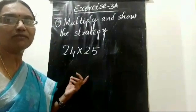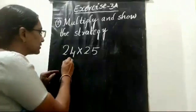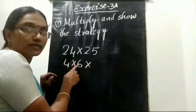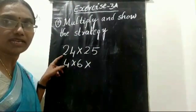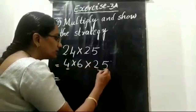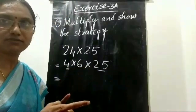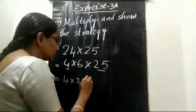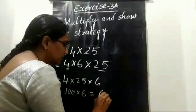One more example. We can break up any number to use the strategy. Here 24 is possible to break up: 4 into 6 is 24. So I break up 24 as 4 into 6, and write 25 as it is. Now consider 4 and 25: 25 plus 25 is 50, 50 plus 50 is 100, so 4 twentyfives is 100. Write it as 4 into 25 into 6: that is 100 into 6, which equals 600.